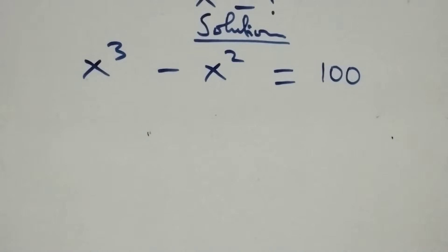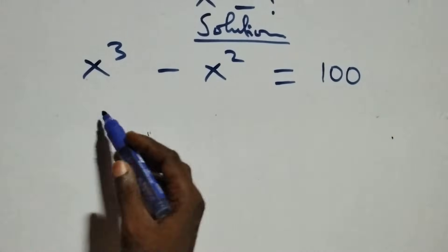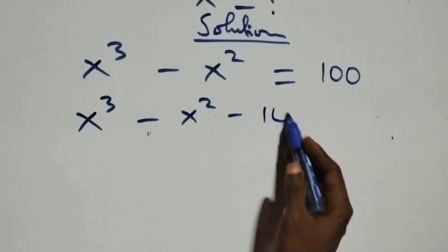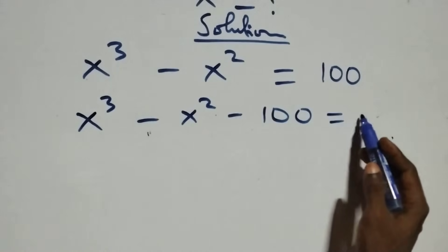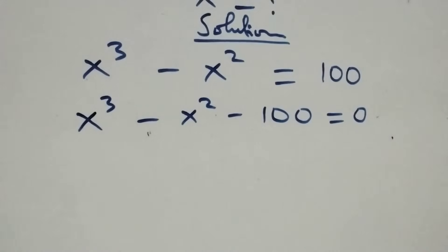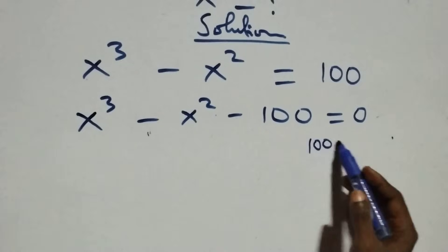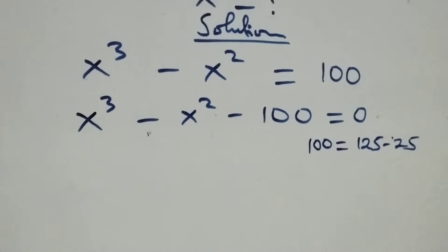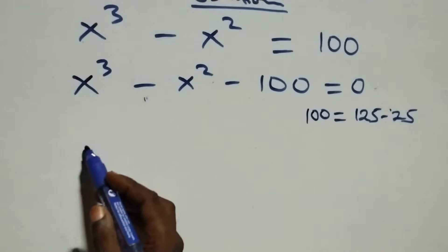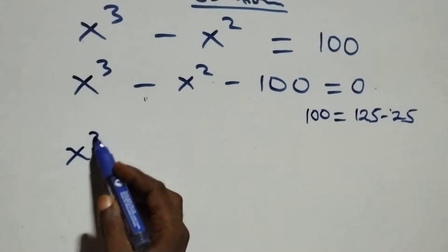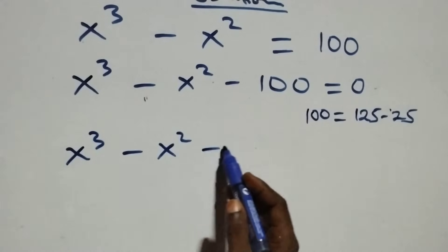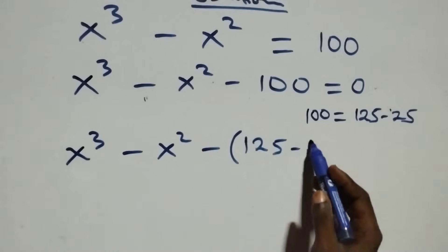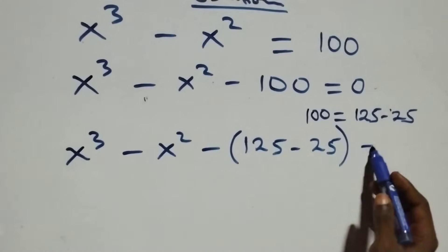In the next step, we take that constant to the left-hand side and we have x raised to the power 3 minus x raised to the power 2 minus that constant, then equals to 0. Our next step: we can express that constant as 125 minus 25. So all we have becomes x raised to the power 3 minus x raised to the power 2, then minus brackets 125 minus 25, plus brackets, then equals to 0.